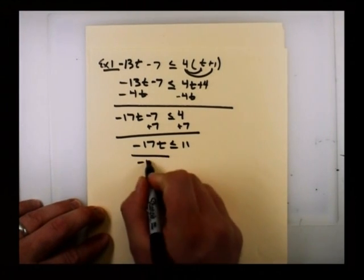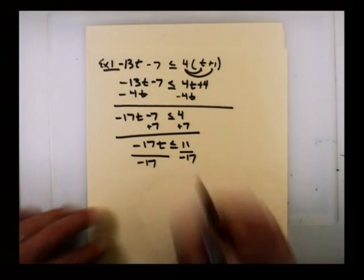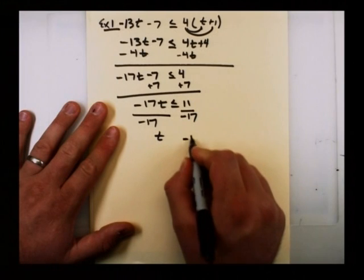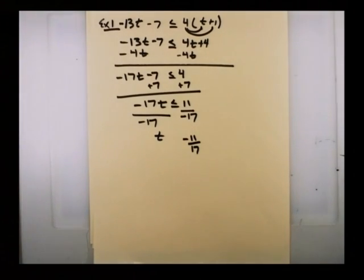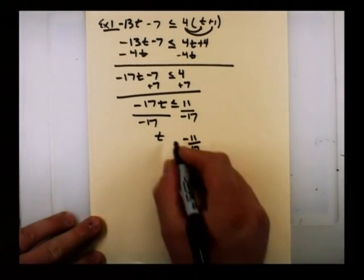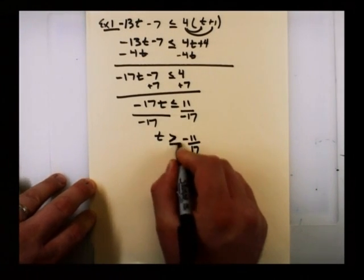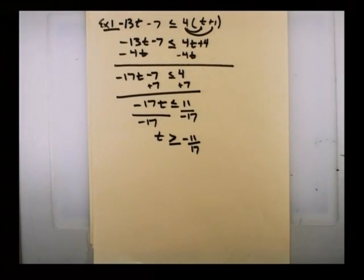One more step left. Negative 17t less than or equal to 11. We divide by negative 17. So we have t left on the left-hand side. We have negative 11 over 17. Now, question: What goes in the middle? Because we divided by a negative, we do have to flip it. So instead of being less than, we're going to have greater than. Keep the equal sign. So t is greater than or equal to negative 11/17. If students need to work another example, go ahead and pause right now.